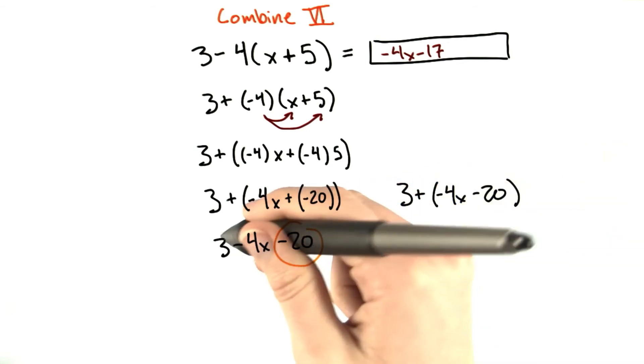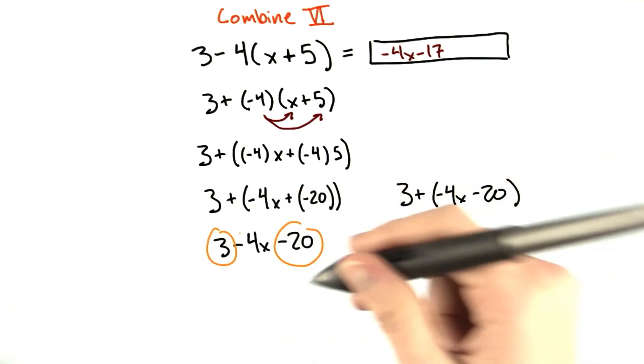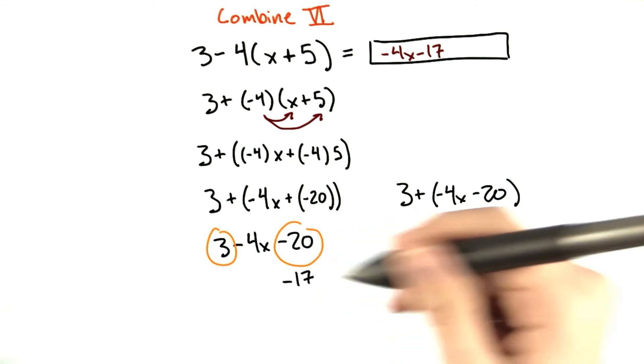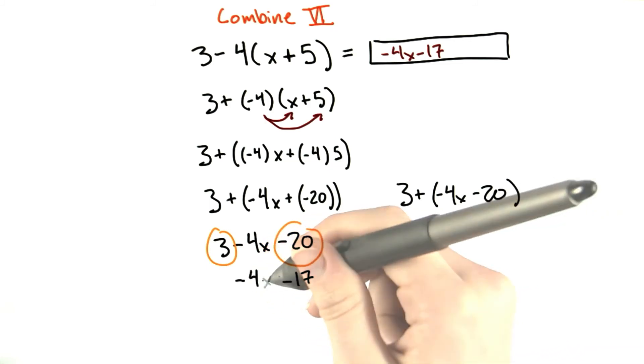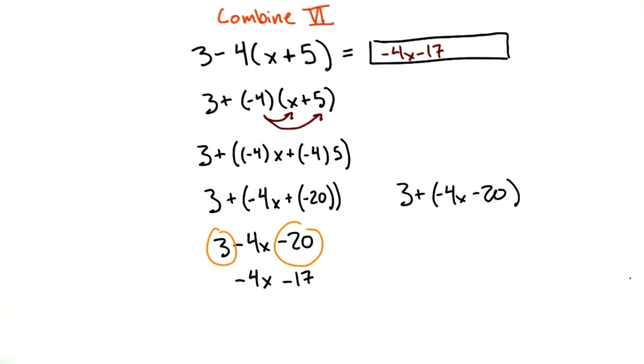We can combine our like terms of 20 and 3, which gives us negative 17, and then negative 4x stays how it is. And that's our answer, negative 4x minus 17.